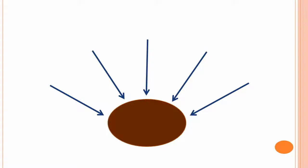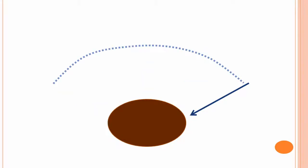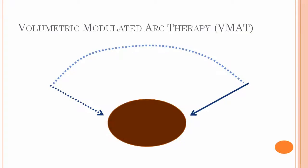However, if we allow the one beam to stay continuously on while moving in an arc and modulating the intensity, we have a new type of therapy modality called Volumetric Modulated Arc Therapy.